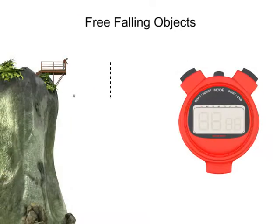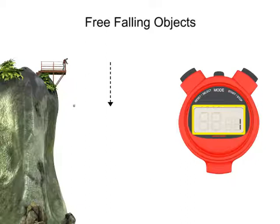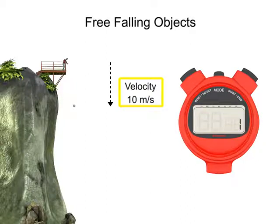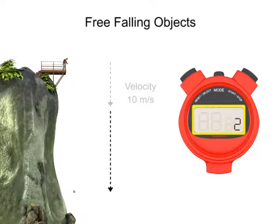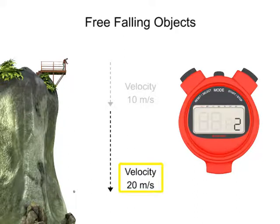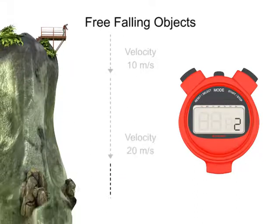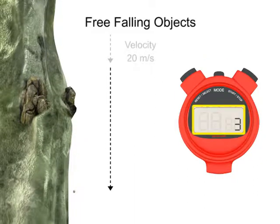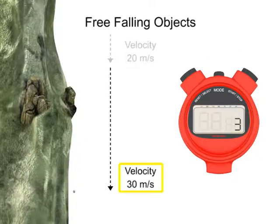Assuming the rock is falling from rest, after 1 second its velocity is 10 meters per second. After 2 seconds, its velocity is 20 meters per second. After 3 seconds, it is falling at a velocity of 30 meters per second.